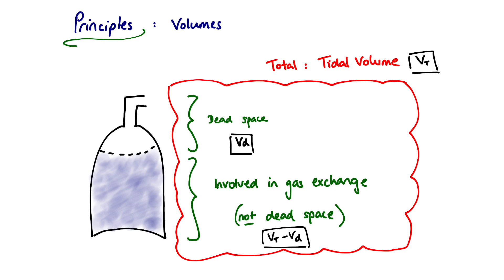So we only use two terms — VT and VD, tidal volume and dead space volume — but we're talking about three important volumes: first, the whole tidal volume VT; second, the dead space volume VD; and third, the volume of airways involved in gas exchange, which is the difference between the two, VT minus VD.